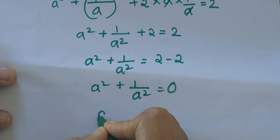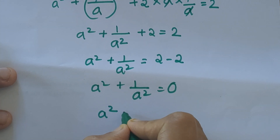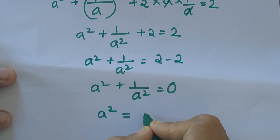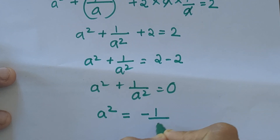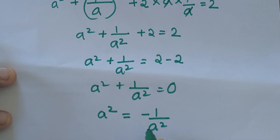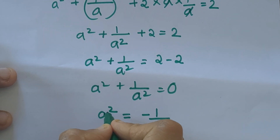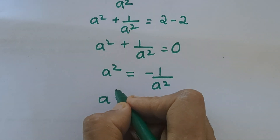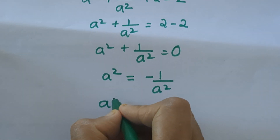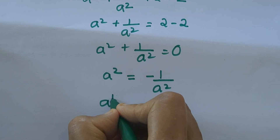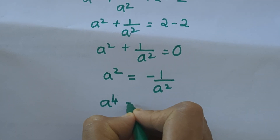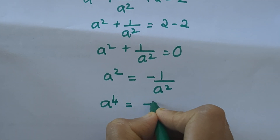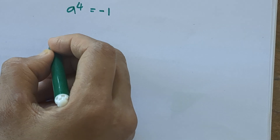So a² = −1/a². We can take a² to the left-hand side, giving us a raised to 4 equals −1.